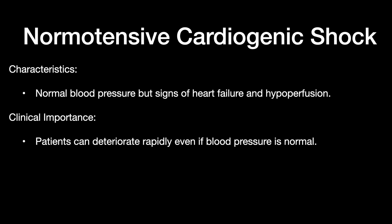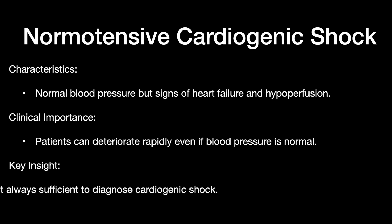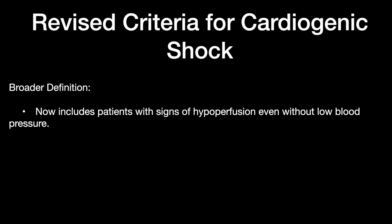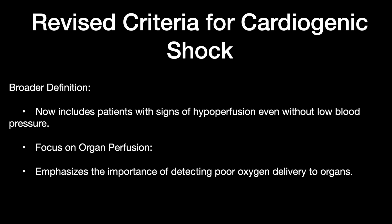Patients can deteriorate rapidly even if blood pressure is being maintained. The key insight here is that blood pressure alone is not always sufficient to diagnose cardiogenic shock. There is a revised criteria for a broader description, including patients with signs of hypoperfusion even without low blood pressure. The focus is on organ perfusion and the importance of detecting poor oxygen delivery to tissues.